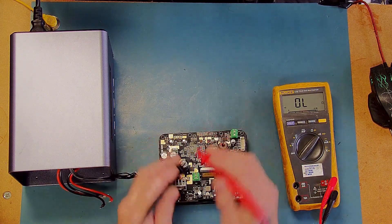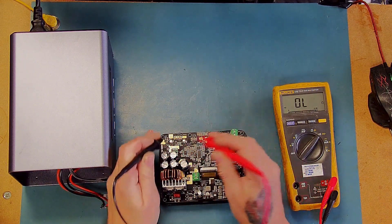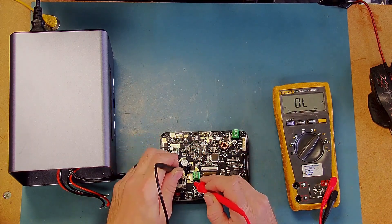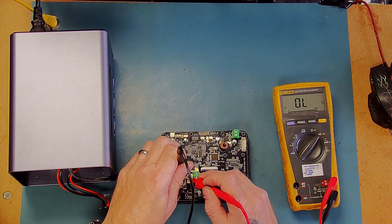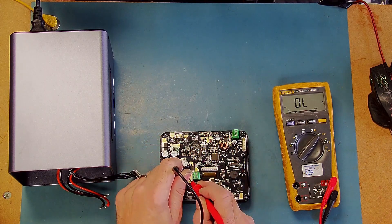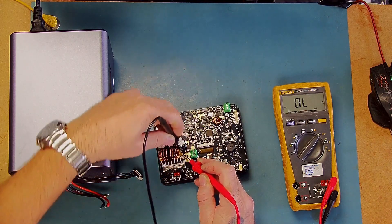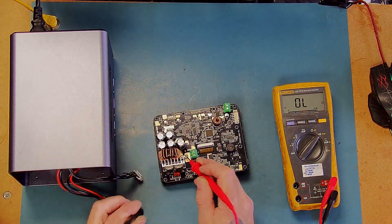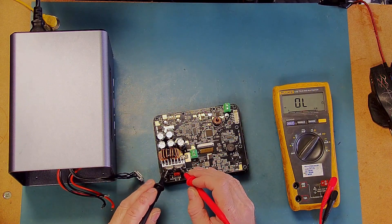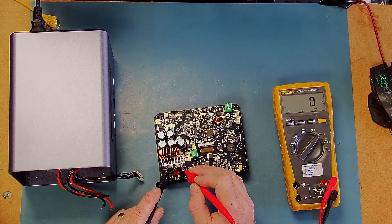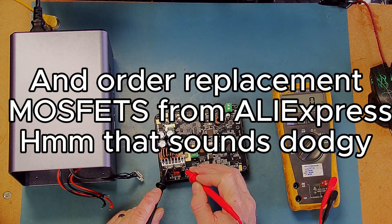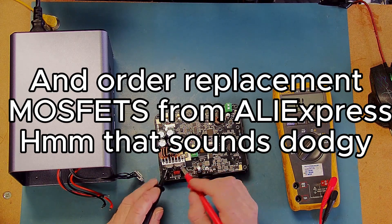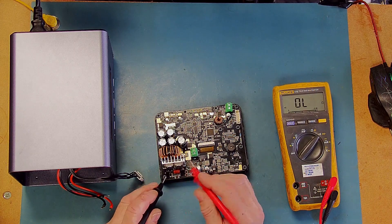I've got the meter in continuity mode. The 15 amp fuse is fine. The 10 amp fuse has blown. If you can see that, the 10 amp fuse is open circuit. And my MOSFETs appear to be shorted across the two MOSFETs. Now I assume as they're insulated from the heat sink that they shouldn't be shorted.